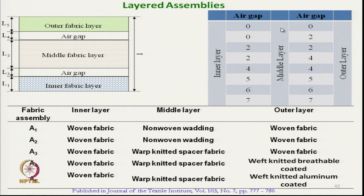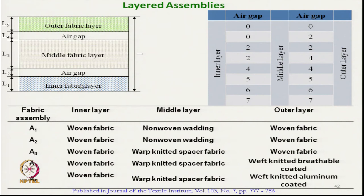A 0 air gap means the total thickness of the ensemble will be the actual combined thickness of the fabrics. Gradually the air gap thicknesses were changed. For example, in the second combination, an additional 2 mm air gap between the middle and outer layer was created with 0 air gap between the inner and middle layer, so total thickness equals the three fabric layers plus 2 mm.